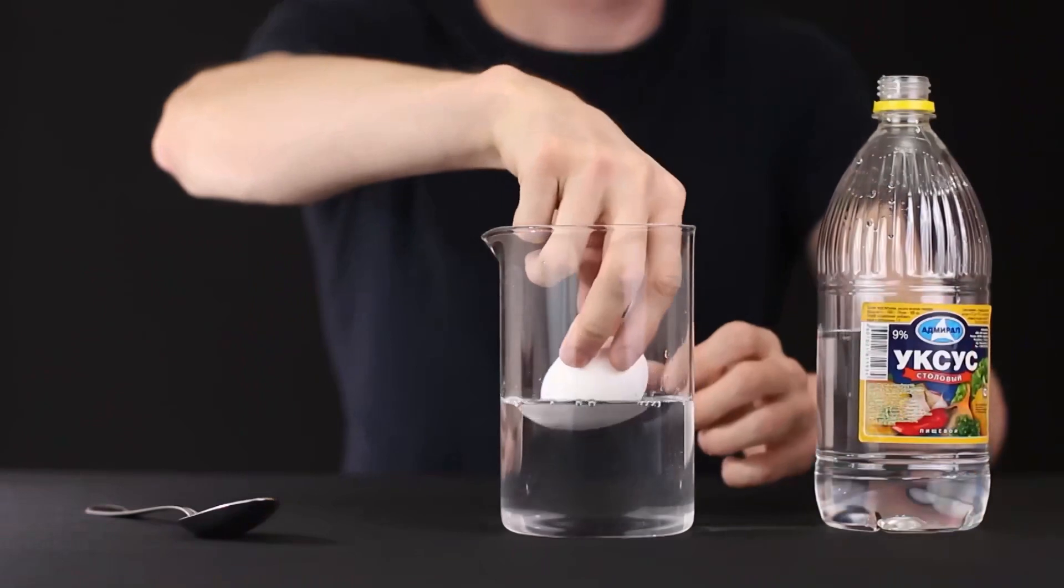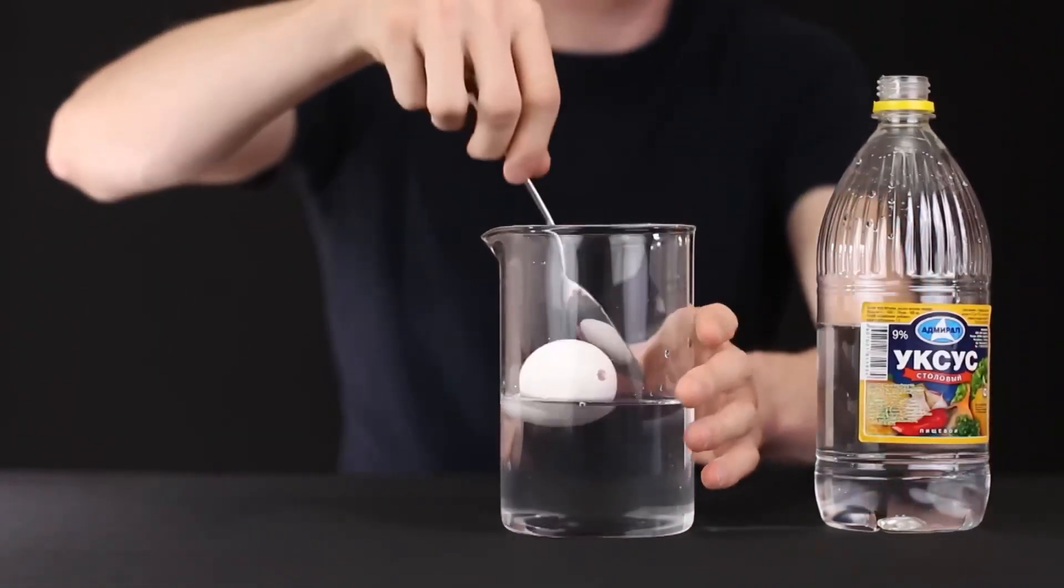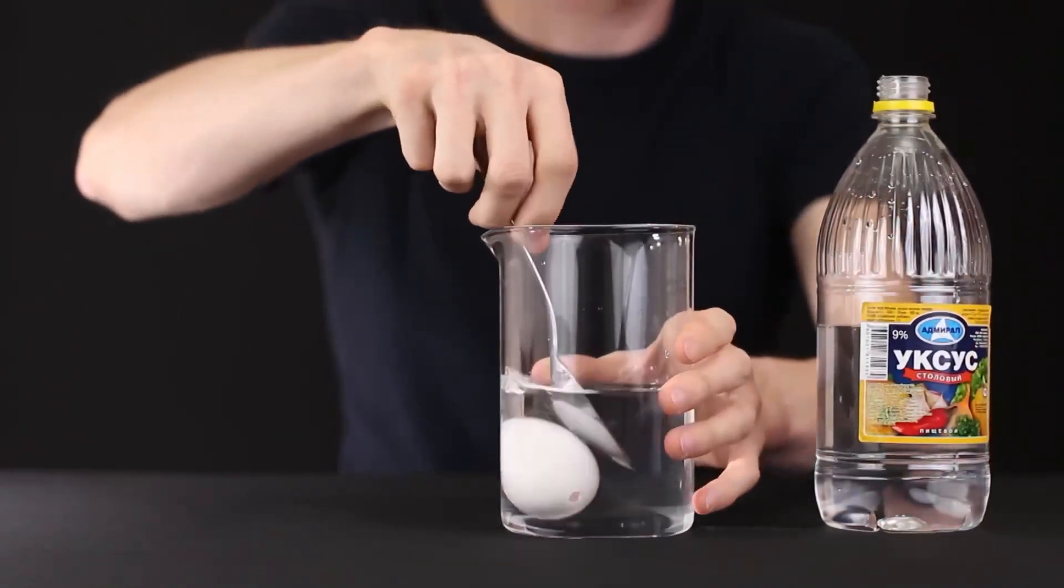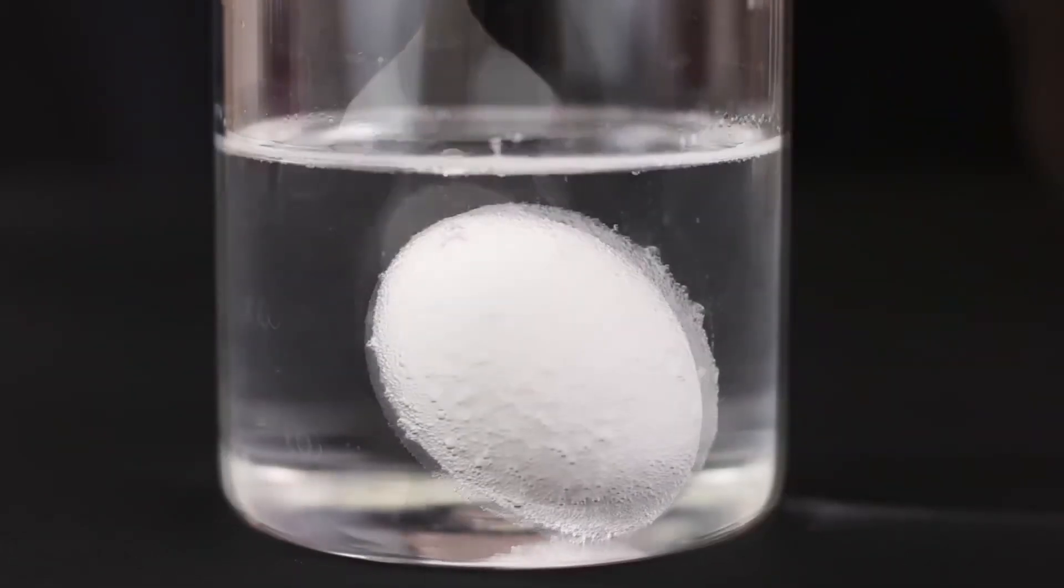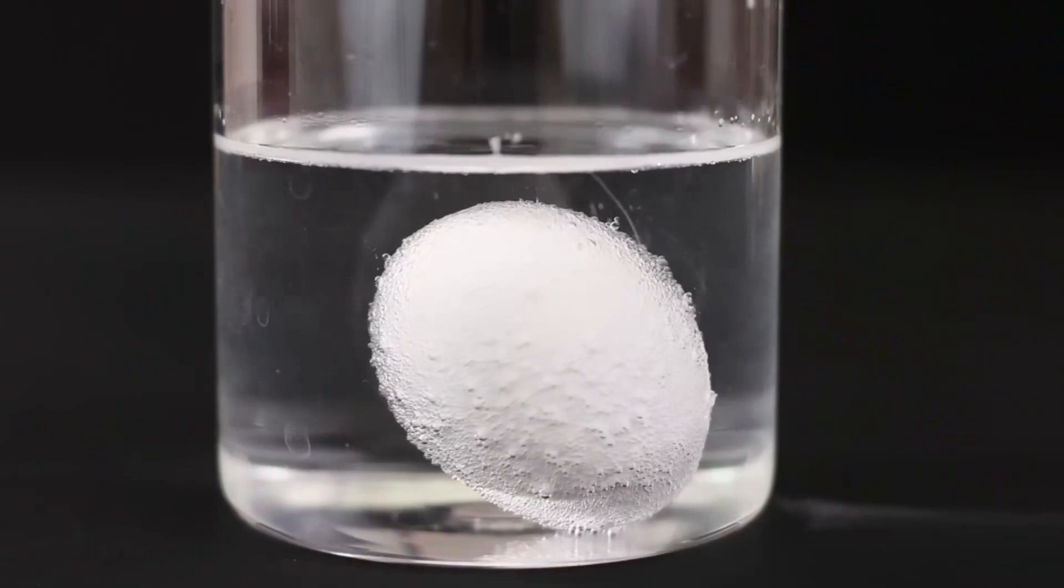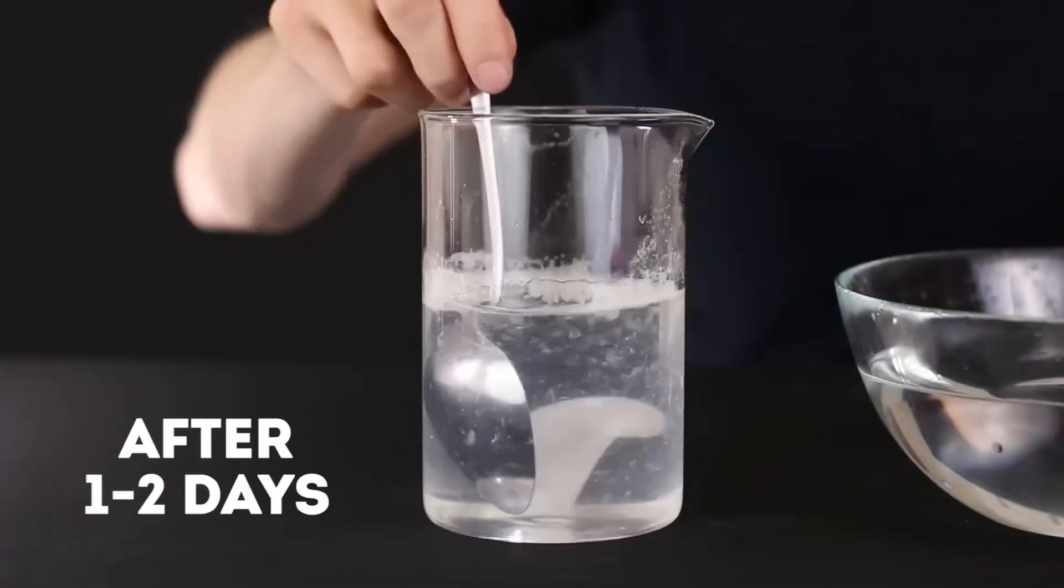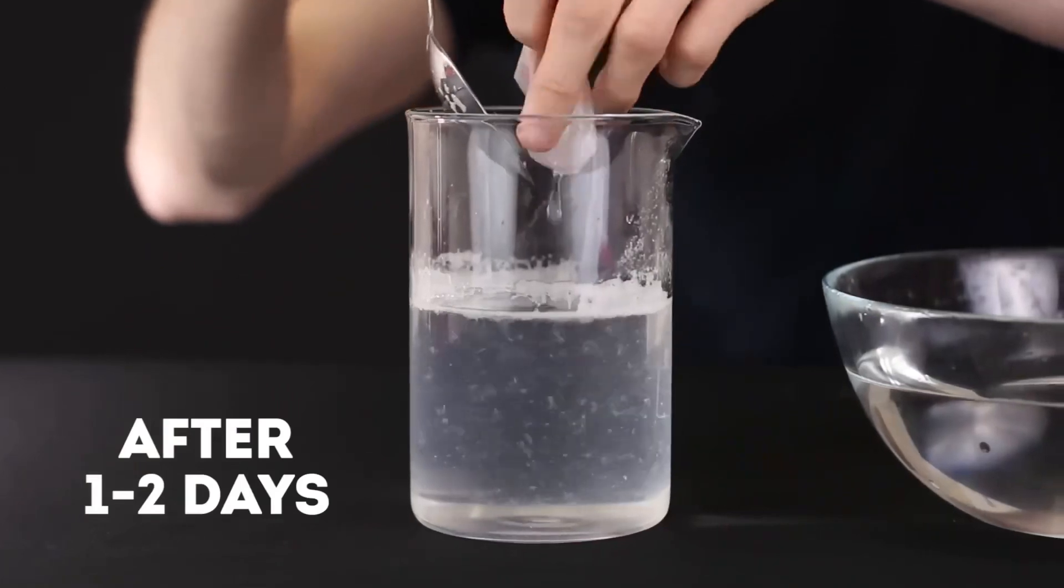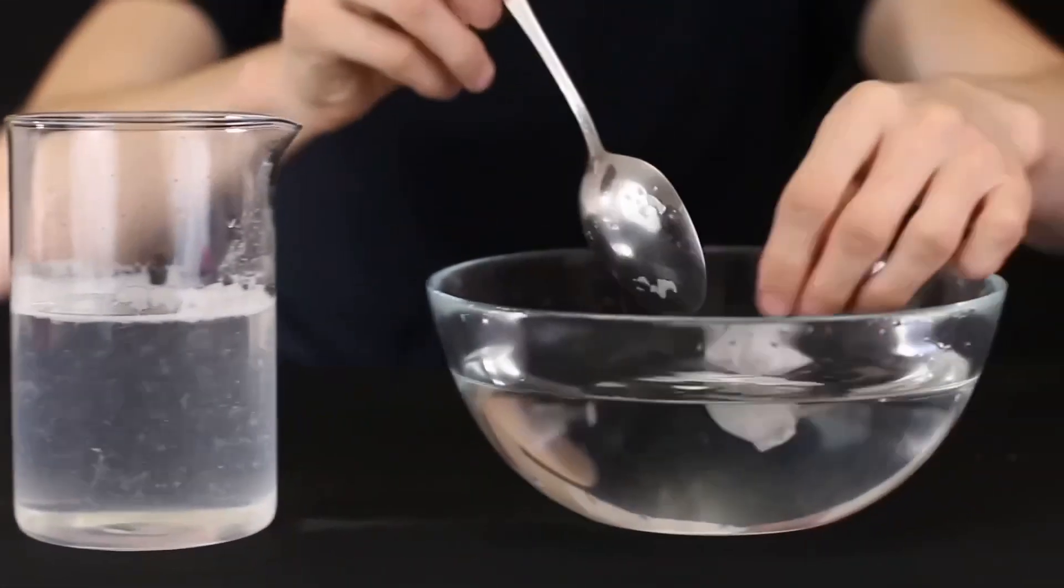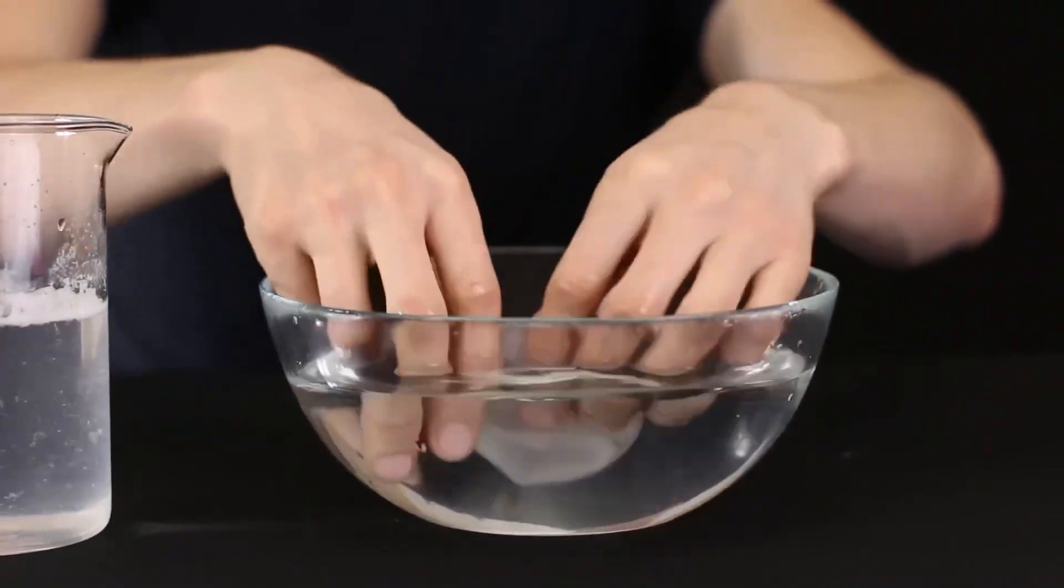Now put the shell in a glass container filled with vinegar. Under its influence, calcium, which the most part of the shell consists of, dissolves. However, the inner membrane will remain intact. After one or two days we will remove the membrane from the vinegar. Rinse it thoroughly to get rid of the precipitation.